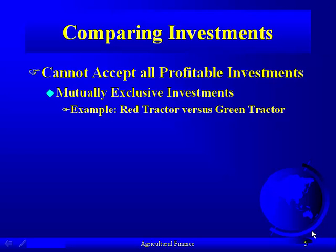An example of mutually exclusive investments is the red tractor versus the green tractor — Case International makes the red tractor, and John Deere makes the green one. If you determine that you need a tractor on the farm and you only need one, you're not going to buy a red one and a green one. You'll choose one or the other.